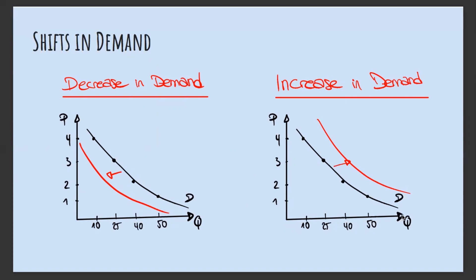Now we will talk about shifts in demand. There is a shift in demand when a factor other than price is changing. The demand can either decrease or increase — when demand decreases it moves to the left, and when demand increases it moves to the right. Let's see why it can be shifting.